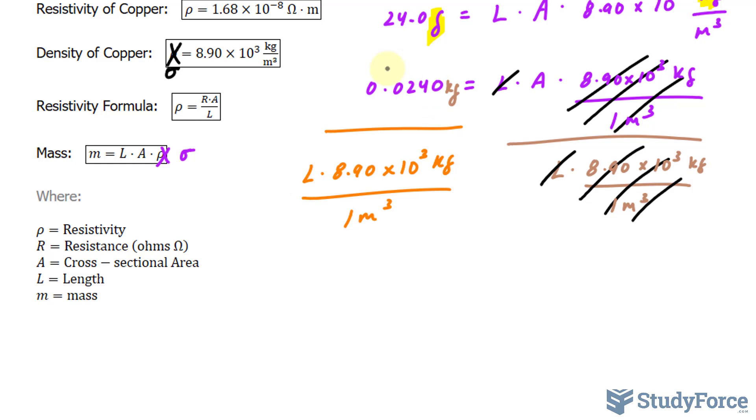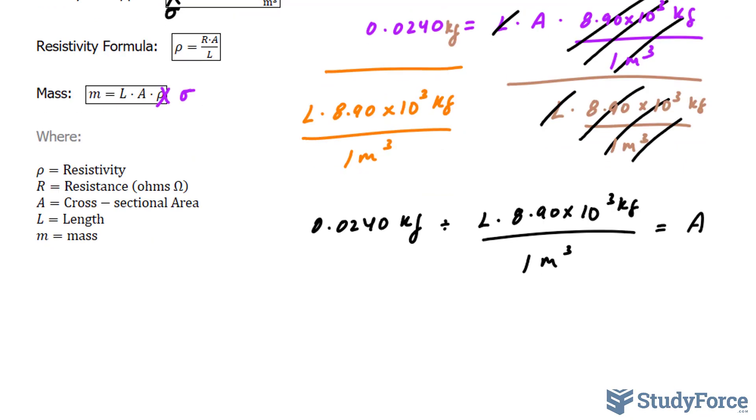Now let's try to simplify the left side as much as possible. We have this number being divided by this fraction. That's the same thing as saying 0.0240 kilograms divided by L times 8.90 times 10 to the power of 3 kilograms per 1 meter cubed. I wrote it down in this extended form so that you can see how the units will cancel out. Because if you divide a number by a fraction, the fraction here will reciprocate and this will change to multiply.